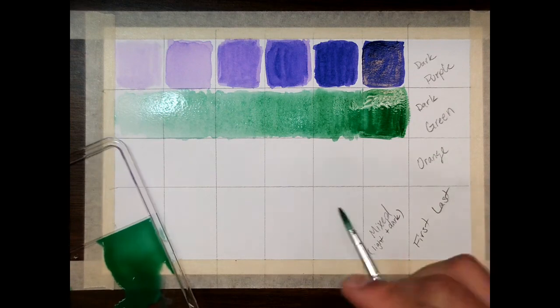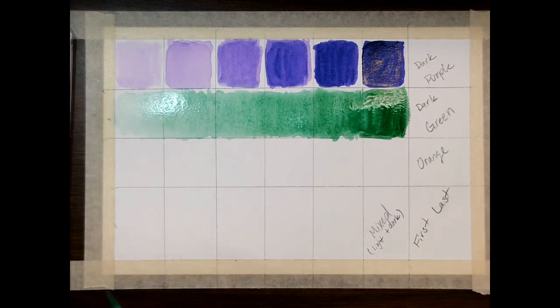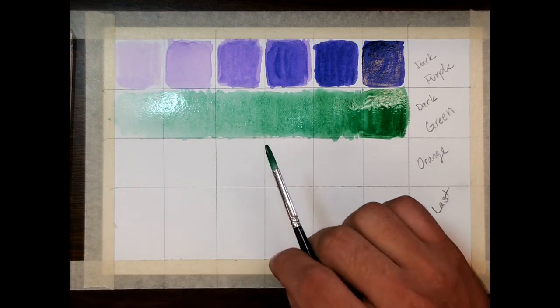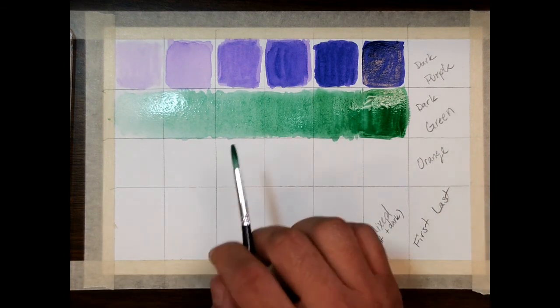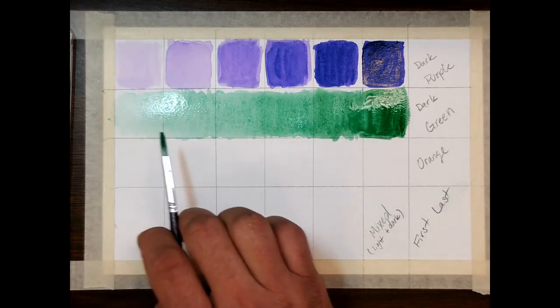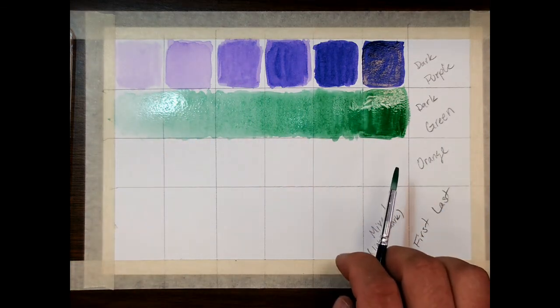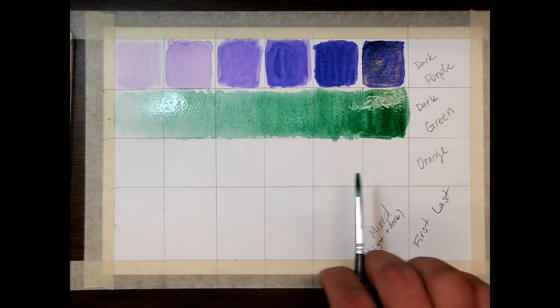Alright, so I'm going to explain the next two things, and then you're going to be on your own to do them. So go ahead, pause what you're doing, look up at the screen for just a second. Orange, you're going to do the same thing. You can choose to do a step value scale, or a gradient value scale, it's up to you. Whatever you think you're probably going to use more in your artwork, you'll do that with orange.